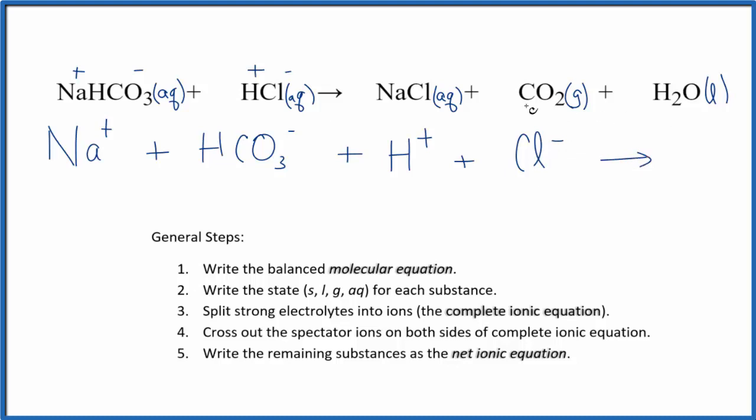Those are the reactants. On the product side, we said sodium's positive and chlorine, that would be negative. We'll have Na plus, plus the chloride ion, Cl minus. And then for gases, liquids, and solids, in net ionic equations, we don't split those apart. So we'll just write CO2 plus H2O. And this is the complete ionic equation. Sometimes it's called the total ionic equation.